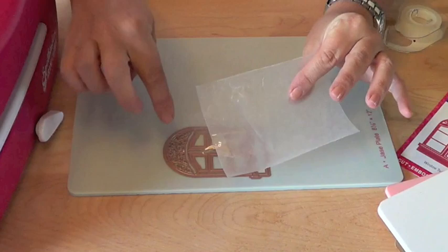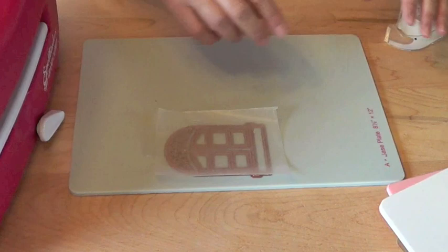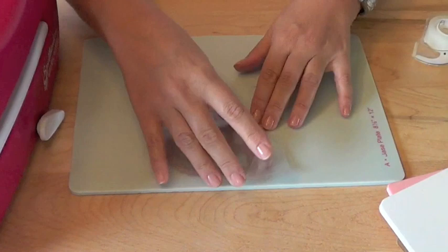Now tip number two is regular kitchen wax paper. This is going to ensure that we're able to remove the cut die from the template with those intricate edges without tearing them. I'm going to tape my wax paper to my base plate A so that it doesn't move on me.